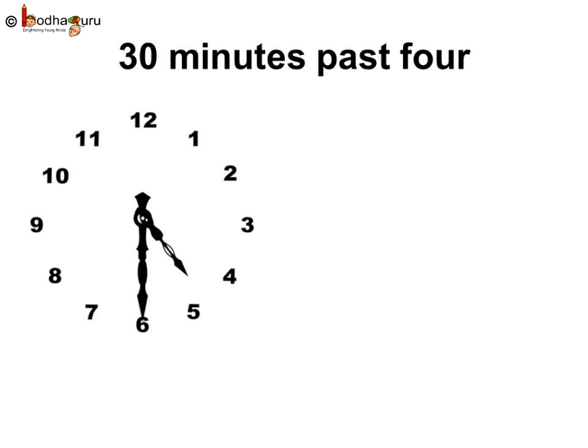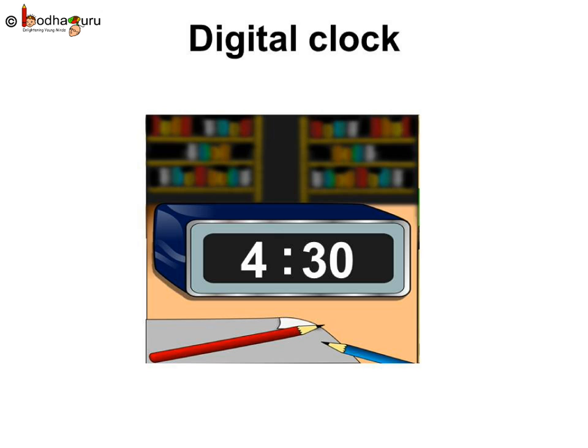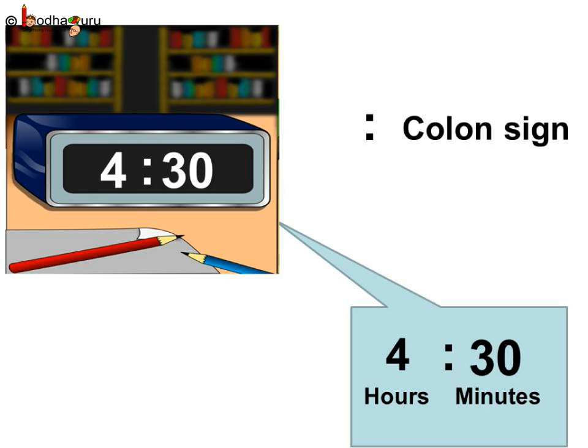And how do we write it using digits? Let's take some examples. You may have seen clocks with no hands, they only show numbers. That is, a digital clock. In digital clock, the number before colon sign tells the hour and the number after colon sign tells us the minutes.